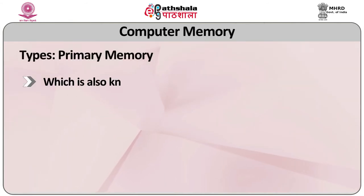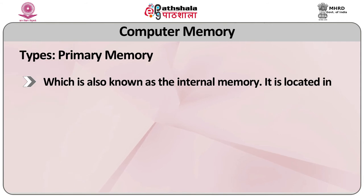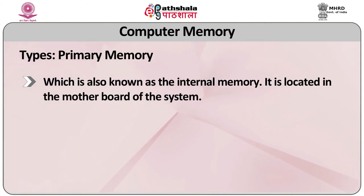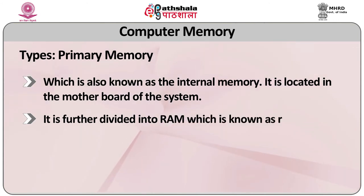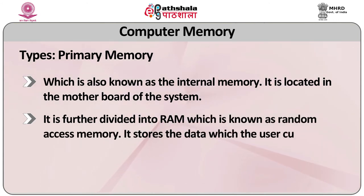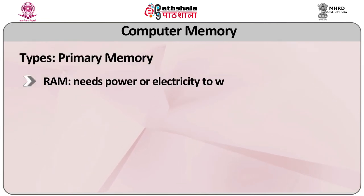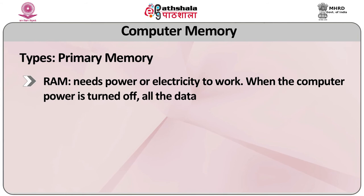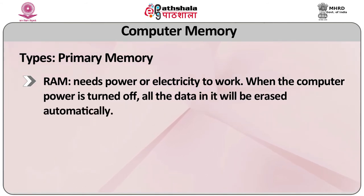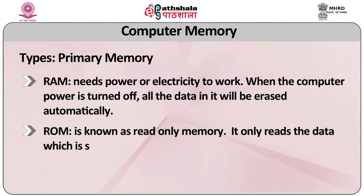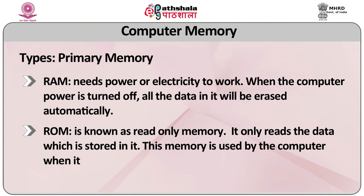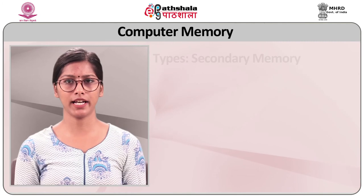Primary memory, also known as internal memory, is located on the motherboard of the system. It is further divided into RAM (Random Access Memory), which stores the data that the user currently uses or stores temporarily. RAM needs power or electricity to work — when the computer power is turned off, all the data in it will be erased automatically. ROM (Read-Only Memory) only reads the data stored in it. This memory is used by a computer when it is turned on and contains the BIOS of the system.